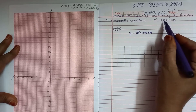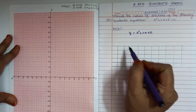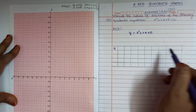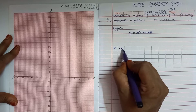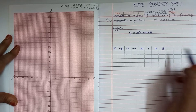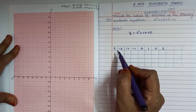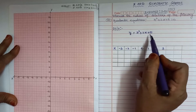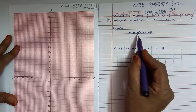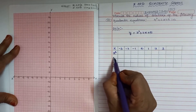For this quadratic equation, y equals — we will create a table. In the table column, for the x values we will assume some negative values, zero, and positive values. In the table we will create columns for x, x squared, plus 2x, plus 5, and the result y.